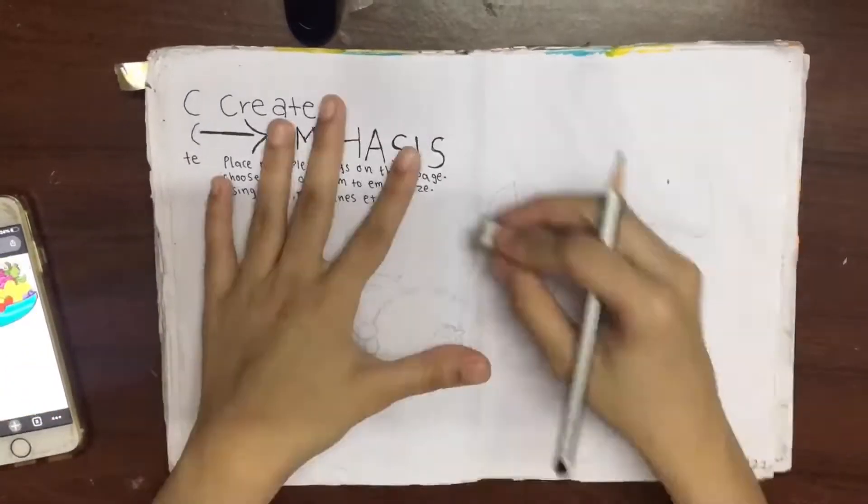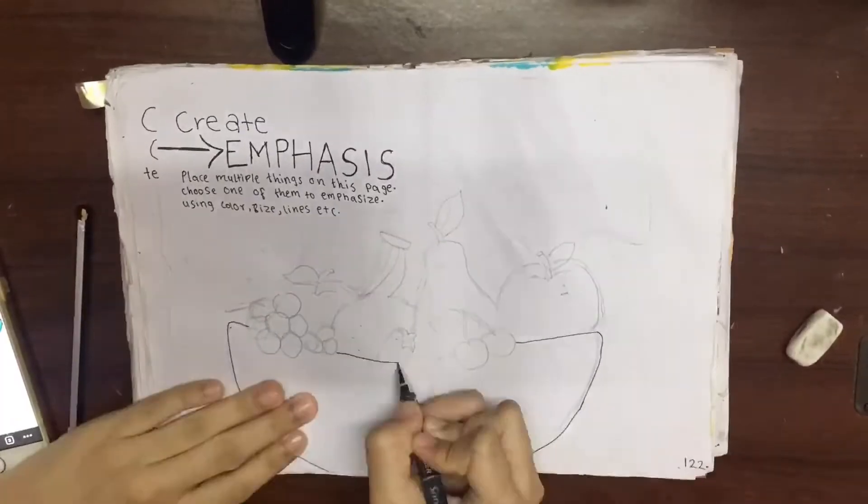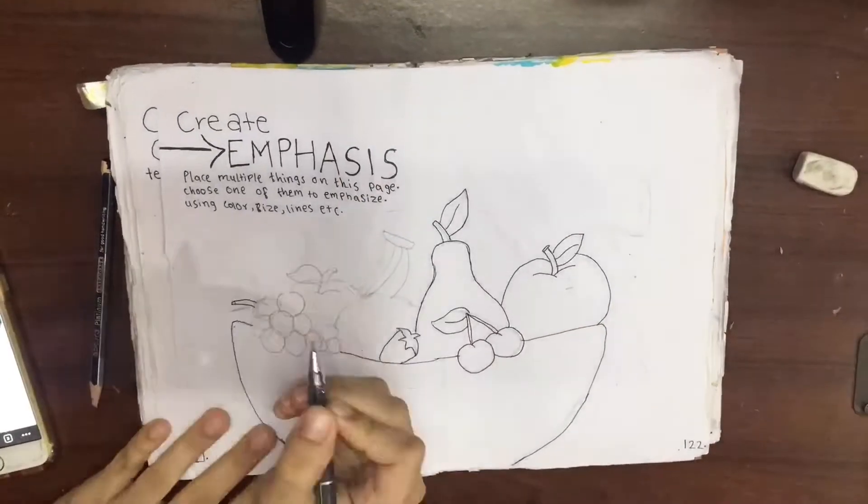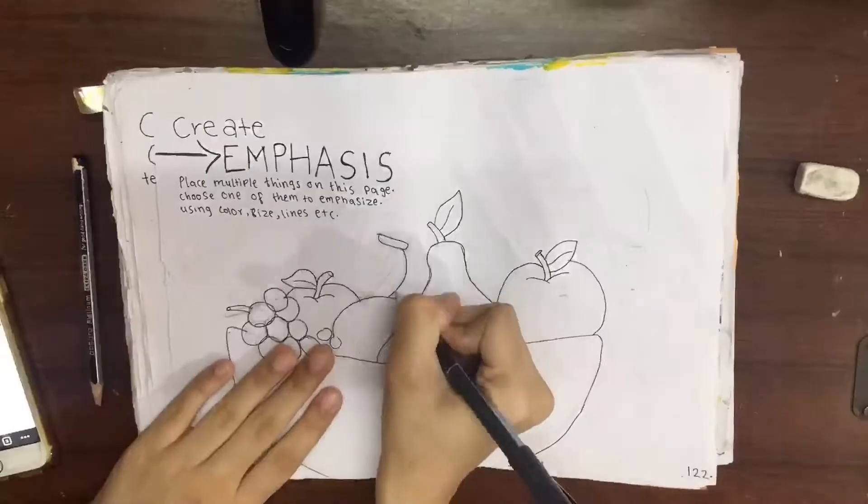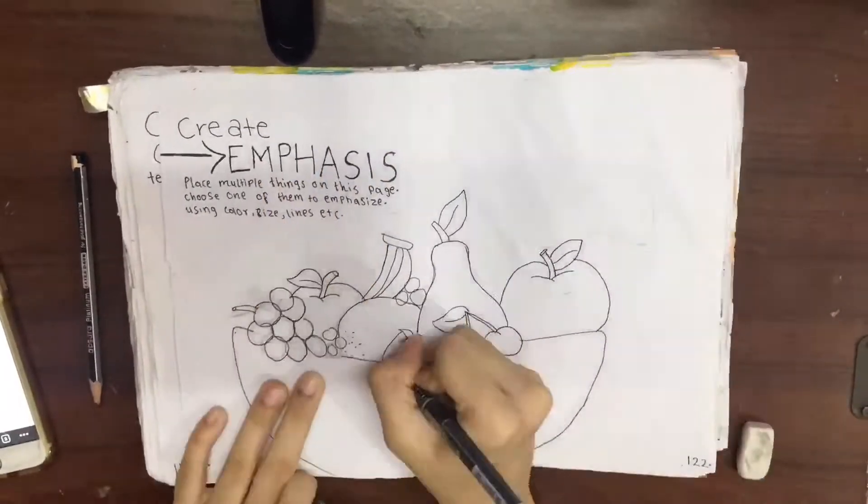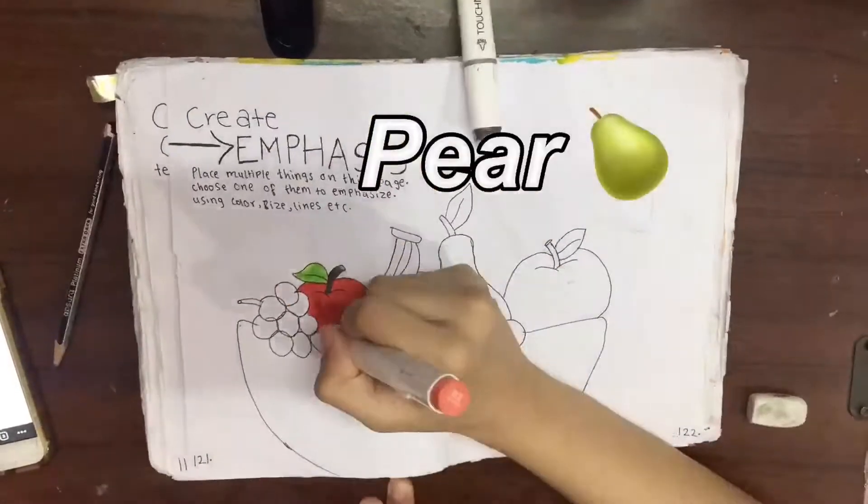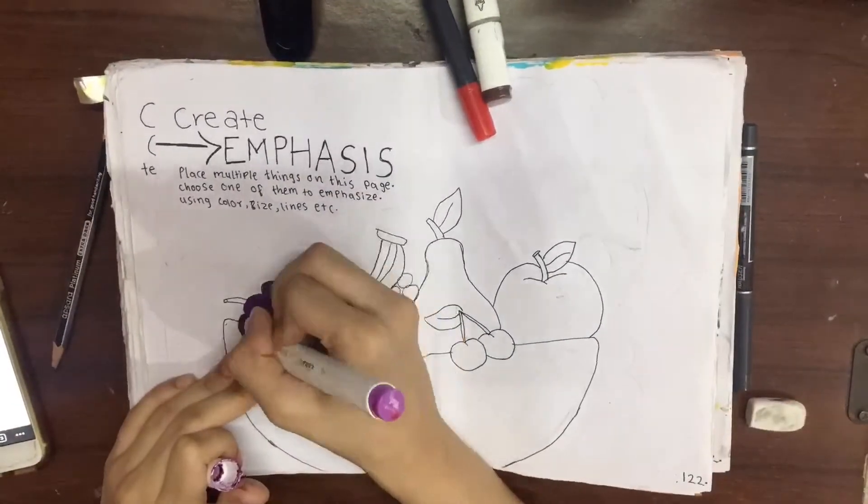My idea was that I would actually draw a lot of fruits in the bowl and then I would choose one, change one of the fruits' color and emphasize it to attract attention, and that fruit was the pear. So that's just what I'm doing right now.